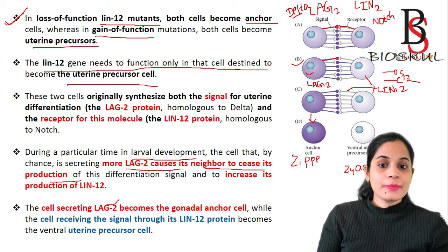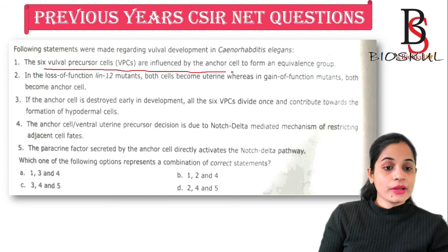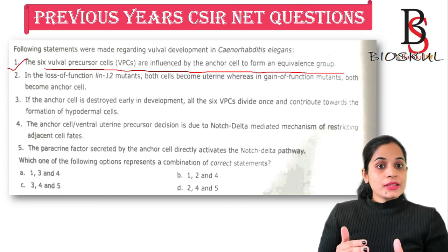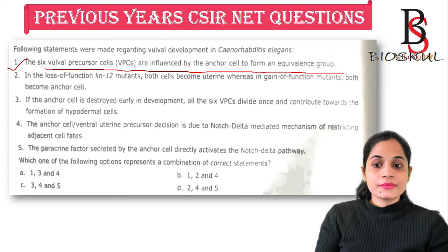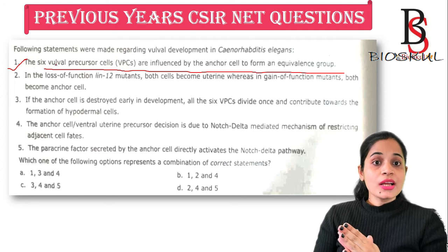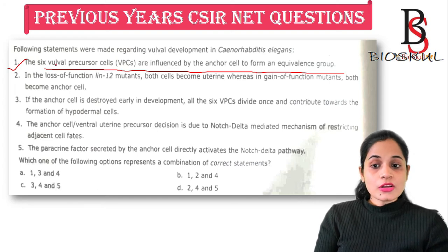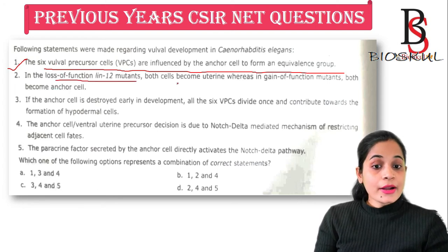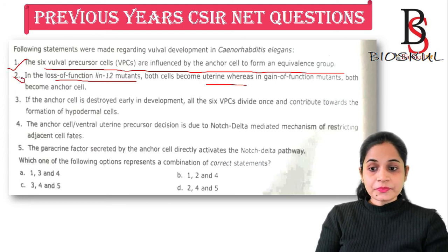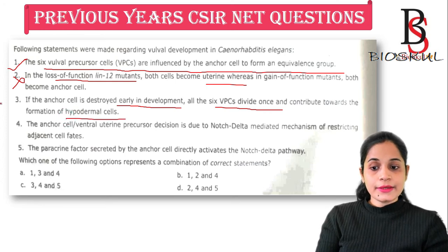Let's look at a previous year question regarding vulvar development in C. elegans. Statement: the six vulval precursor cells are influenced by the anchor cell to form an equivalence group — yes, this is correct as discussed in the previous video on vulva development. In the loss of function of lin-12 mutant, both cells become anchor cells, not uterine tissue — so a statement claiming they become uterine tissue would be wrong. If the anchor cell is destroyed in early development, all six vulval precursor cells divide once and contribute to the formation of hypodermal cells — this is correct.